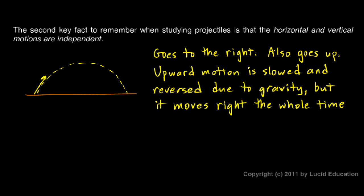In other words, it continues moving to the right even as it comes back down. The key point is that horizontal and vertical motions are independent. The fact that gravity is changing the vertical motion doesn't affect the horizontal motion at all. Gravity only pulls downward.